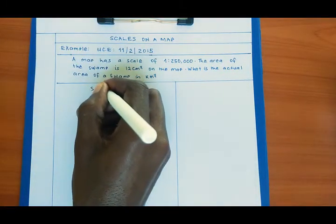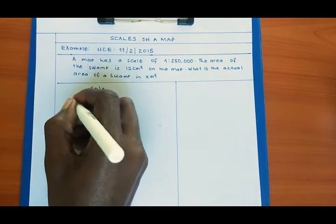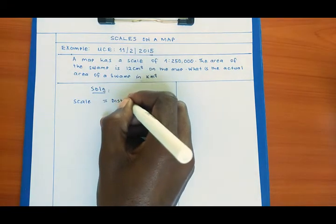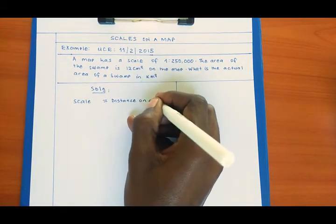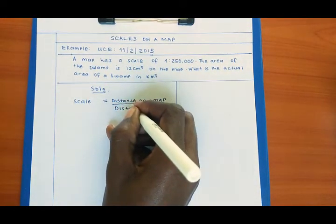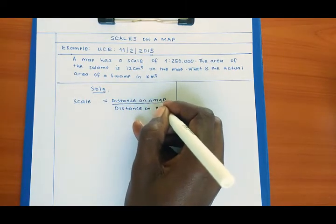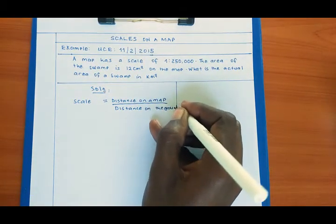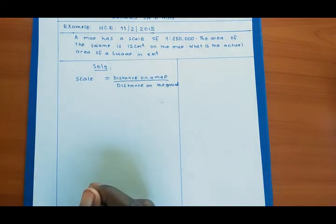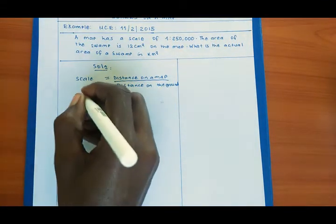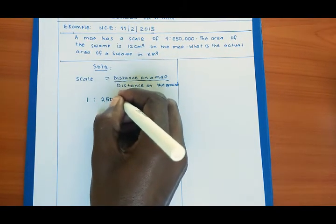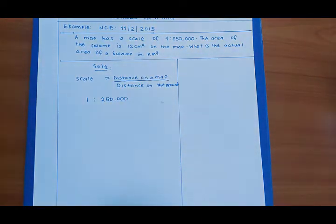You know the scale will give us distance on a map divided by distance on the ground or the actual distance. So the scale on the map they have given us 1 to 250,000. Then that means 1 centimeter on a map represents 250,000 centimeters on the ground.